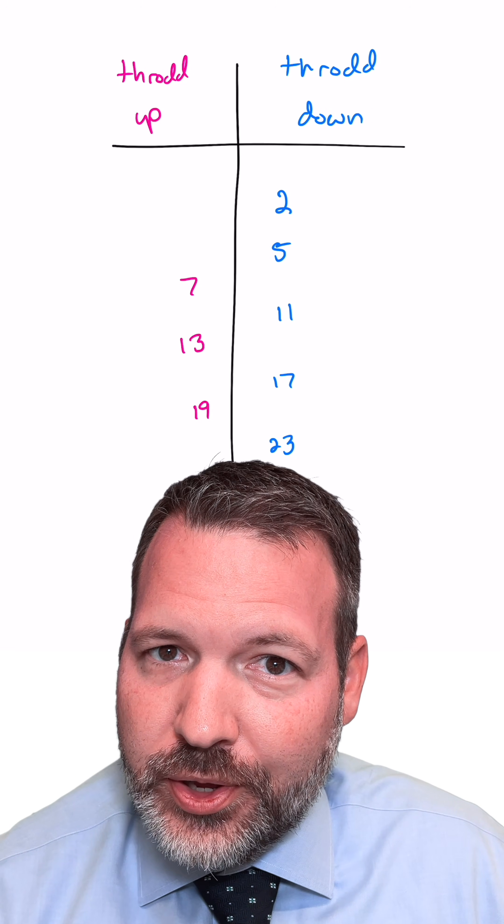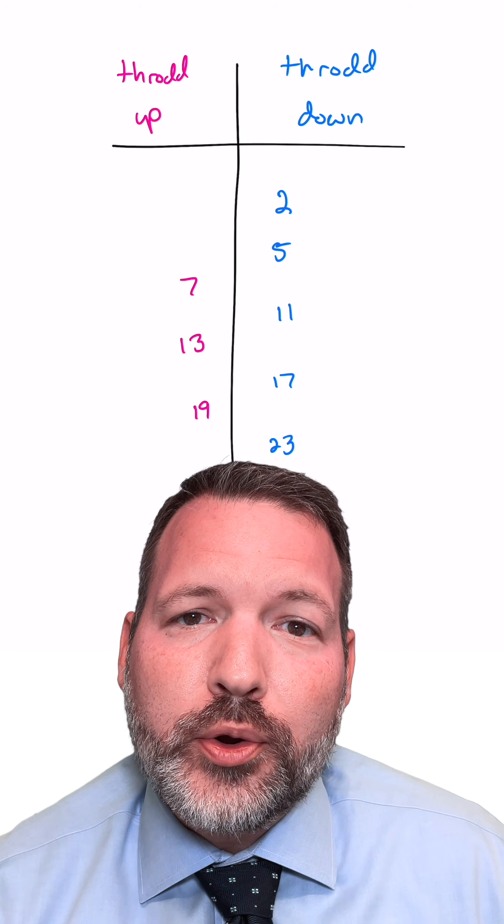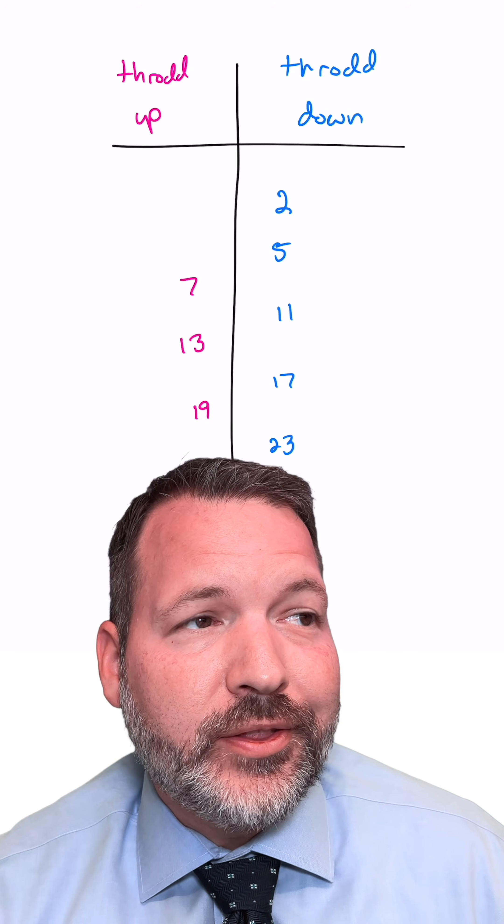But if you start counting from two, you find that for a very long time, there are always more throd down prime numbers than there are throd up prime numbers.